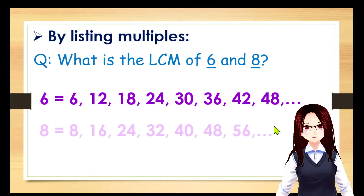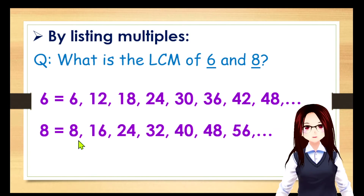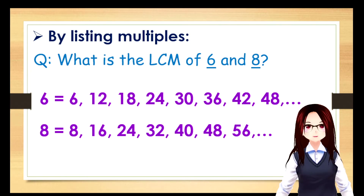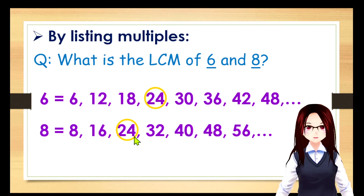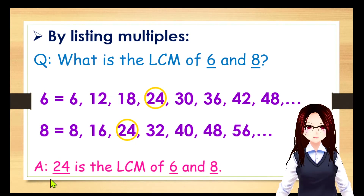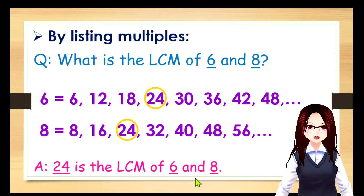For 8, we have its following multiples too. We are going to find the least common multiple — common means the same. Here we have 24; they share the same multiple of 24, so 24 is the least common multiple of 6 and 8.